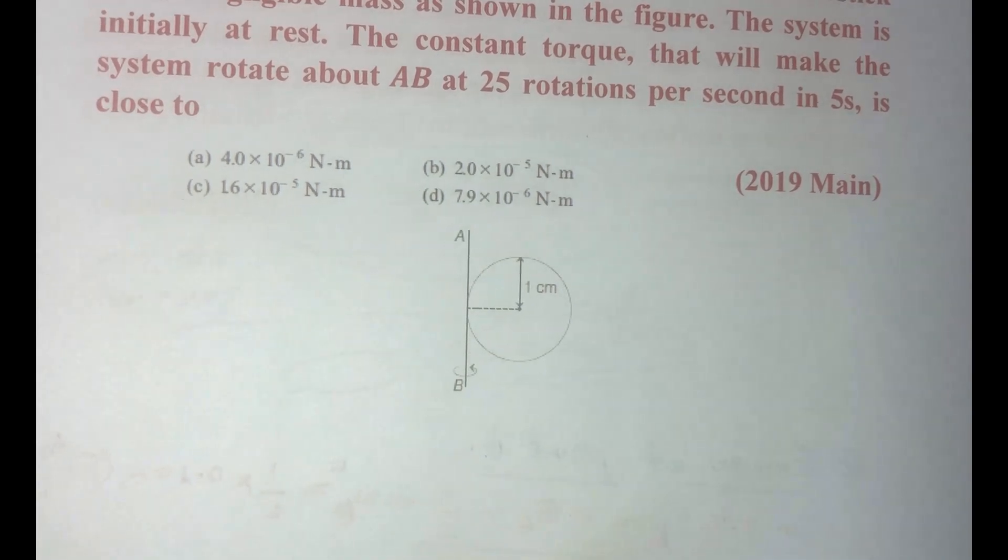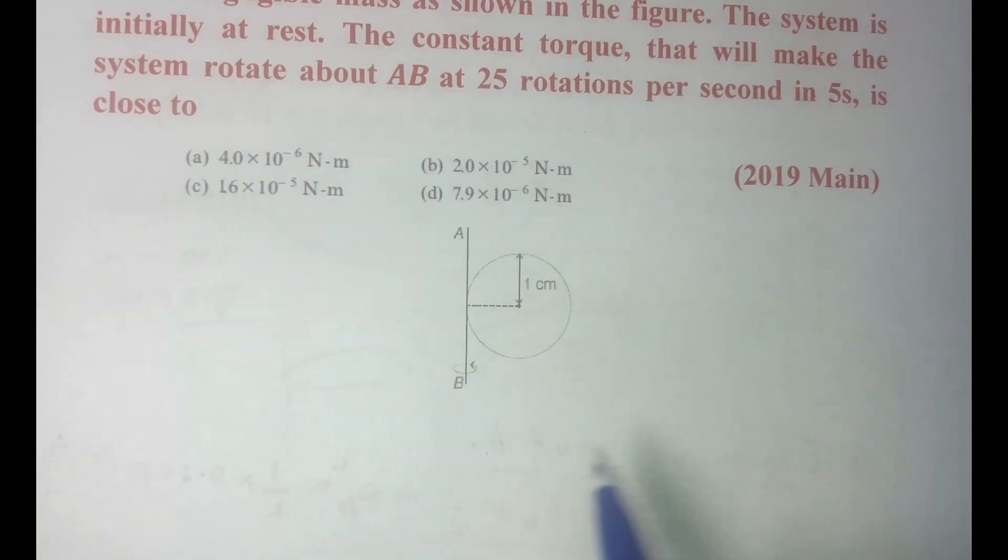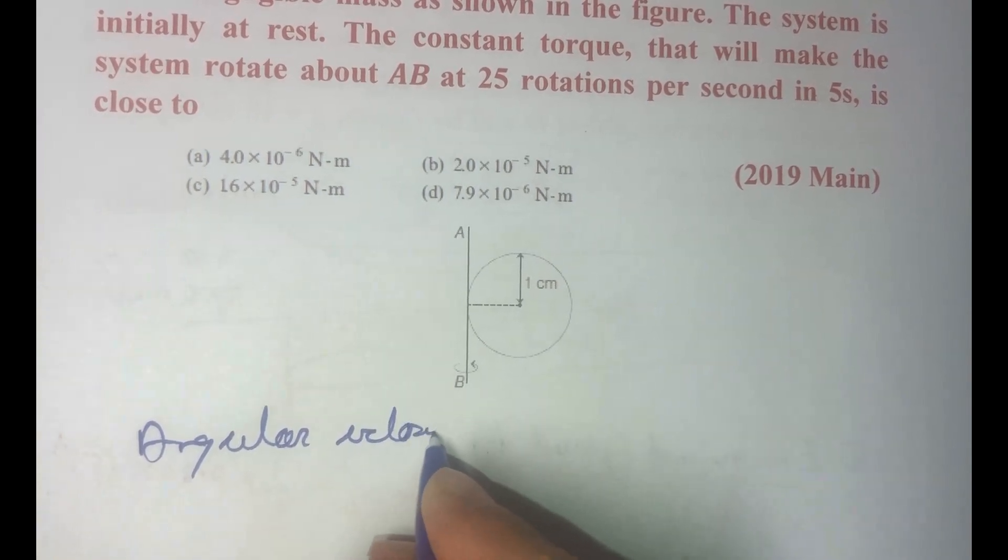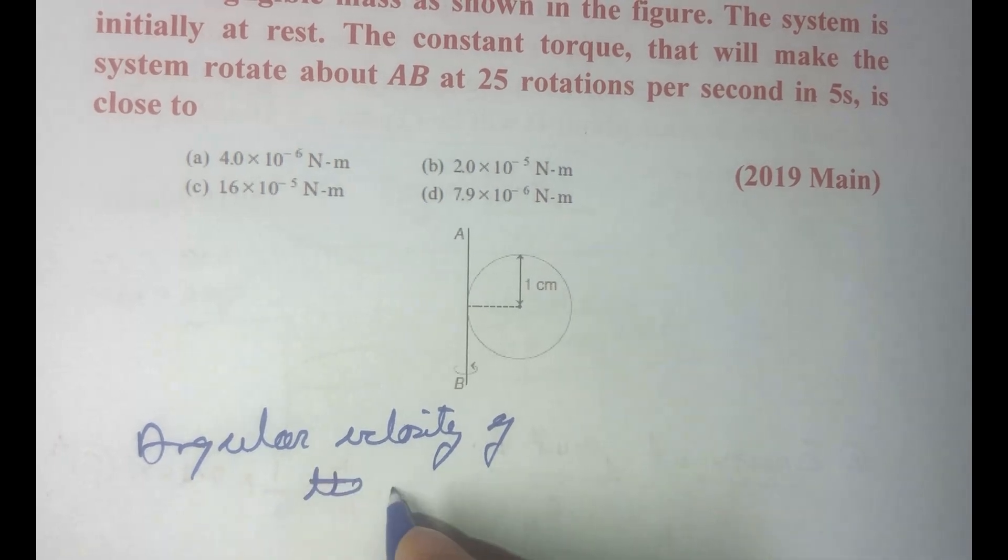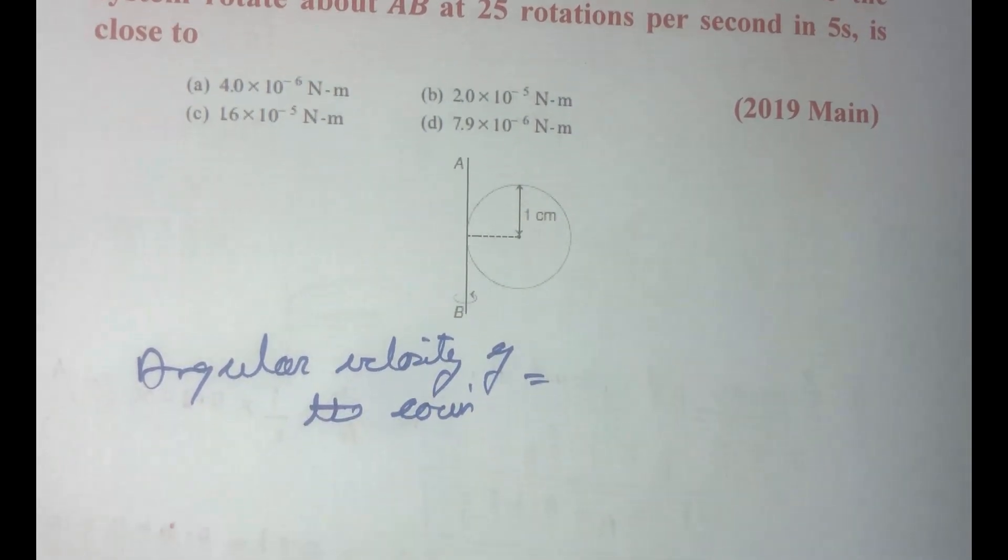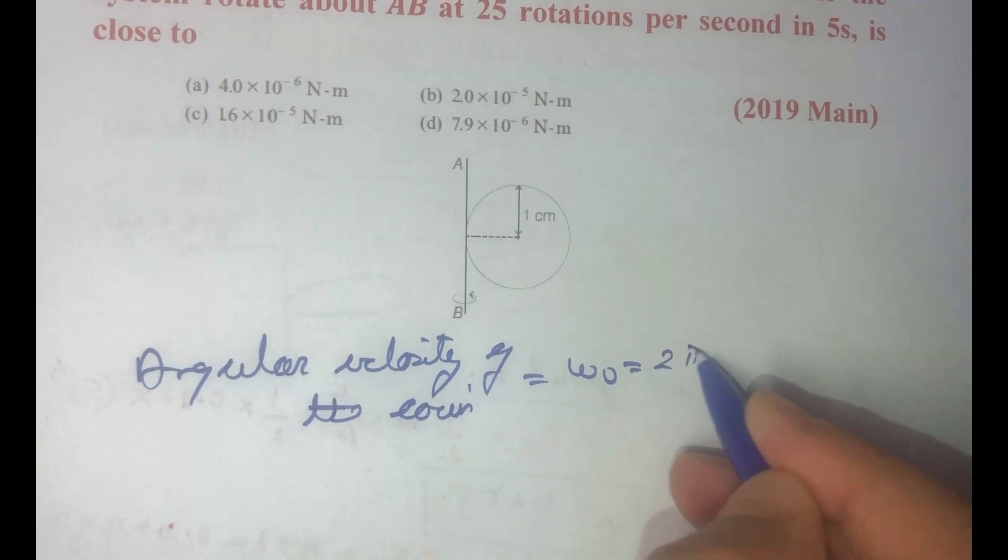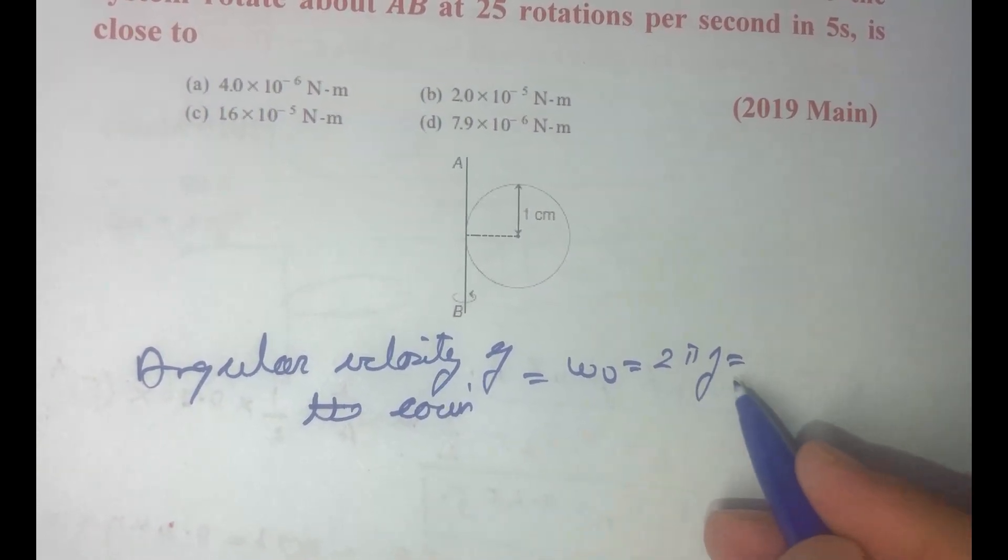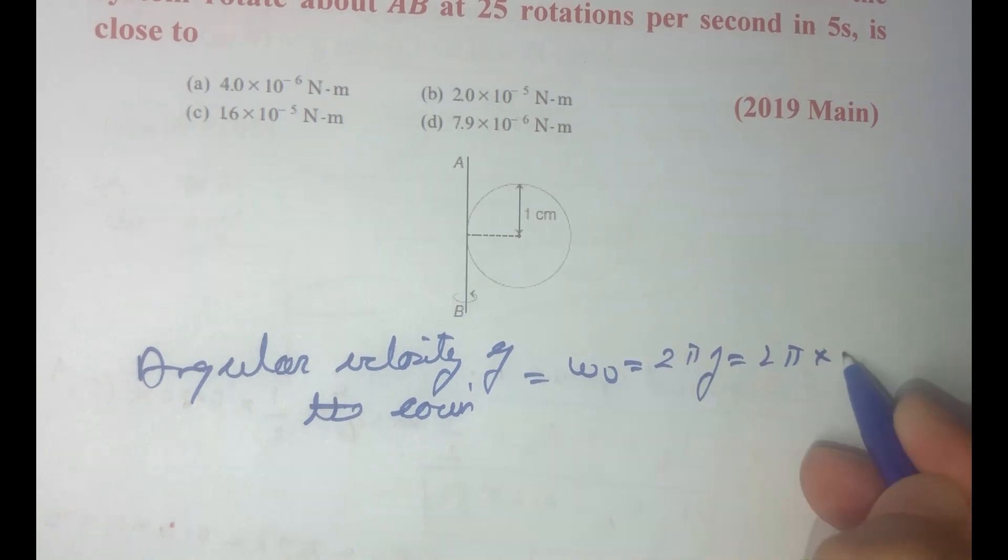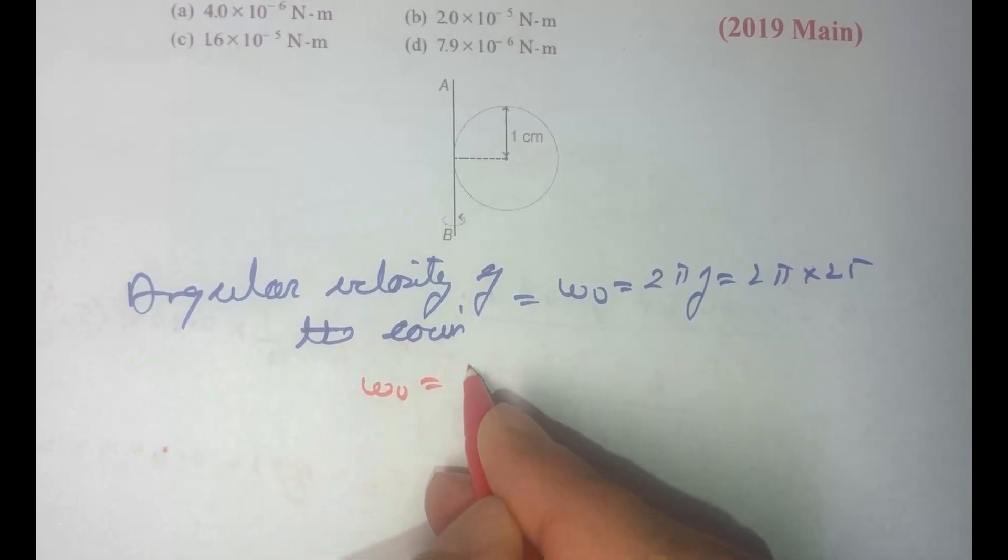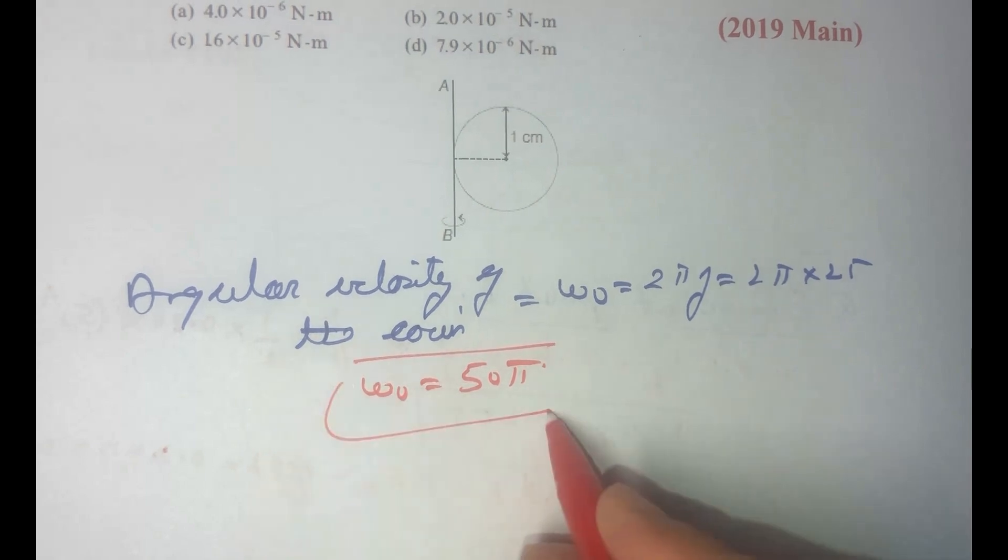So in this case first of all let's find out what will be the angular velocity of the coin. Angular velocity of the coin, let us call that omega 0, which will be equal to 2 pi f and f is given as 25 rotation per second so that is frequency, so this is 2 pi multiplied by 25. So from here we get omega 0 is equal to 50 pi.